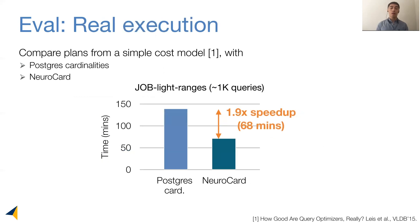Finally, we look at real execution results by comparing the plans produced from a simple cost model injected with either Postgres cardinalities or NeuroCard cardinalities. On this benchmark, the NeuroCard plans can achieve almost 2x speedup. This adds evidence to a growing number of studies that suggest that the better the cardinalities, the better our plans are.